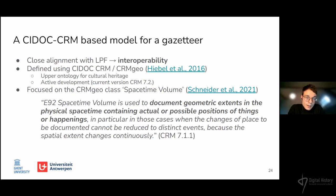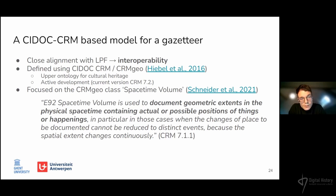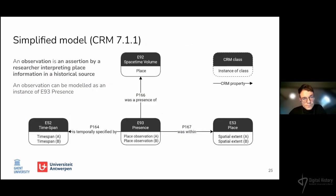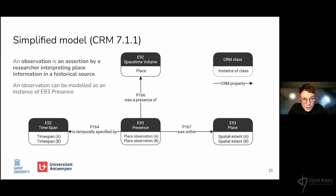An extension to CRM, aptly called CRM-GEO, introduced the concept of space-time volume, which can be used to document the existence of a place in space and time. A model for a CRM-based gazetteer for medieval and early modern places has been discussed by Schneider et al. The gazetteer model I will present here modifies their reasoning centered around the concept of space-time volume, to further align it with the Linked Places Format and the newer version of CIDOC CRM.